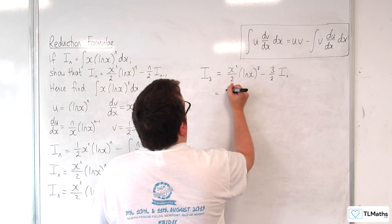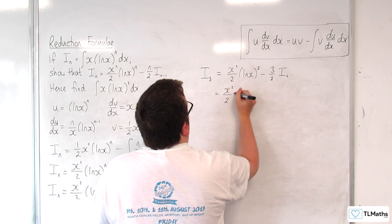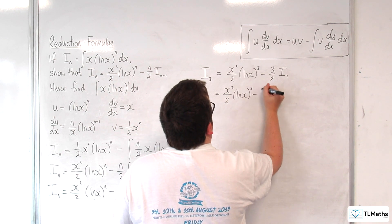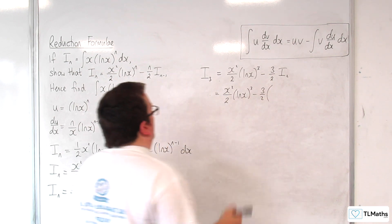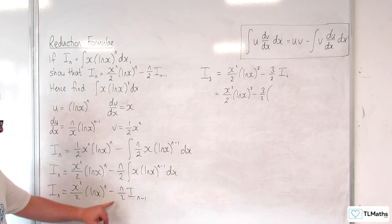Okay, so we've got x squared over 2 log of x cubed, take away 3 halves of i_2. So substituting n is 2 now,